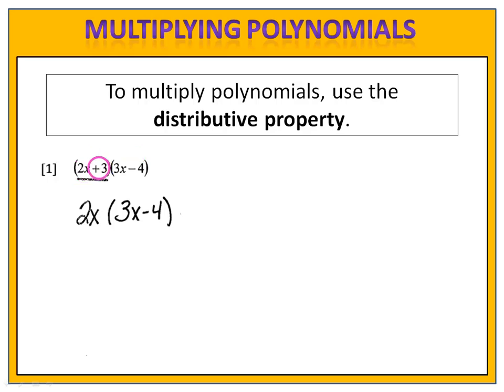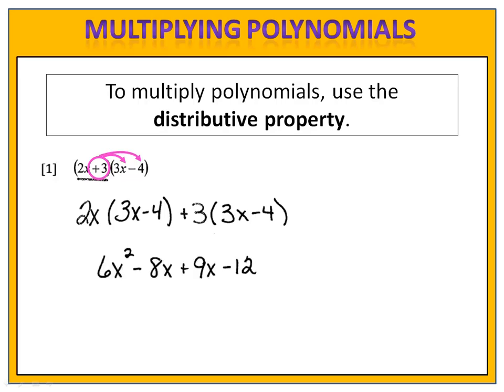Then we'll take the second term, the 3, and we'll distribute that into the 3x minus 4. From here, we just do the actual distributing and then we combine like terms.